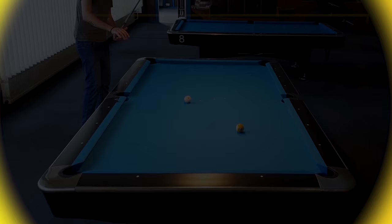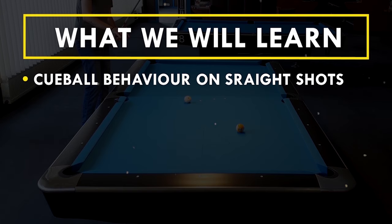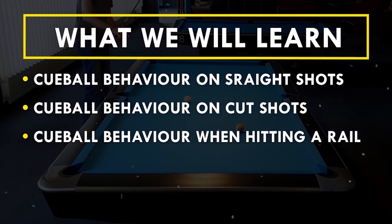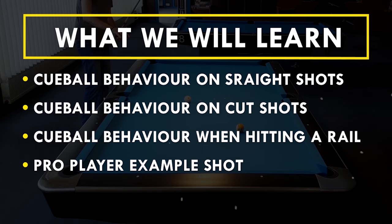To make things easy, let's first have a look at straight-in shots, then we are going to look at cut shots. I will also show you what the force causes the cue ball to do when hitting a rail, and at the end I will show you a perfect example from the final of the US Open 2019 between Josh Filler and Jeff DeLuna.